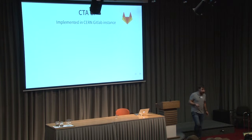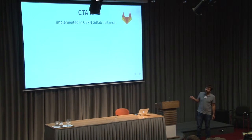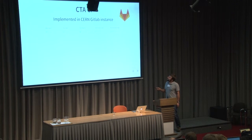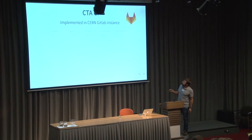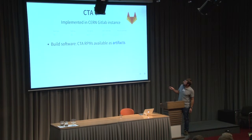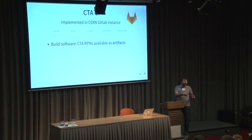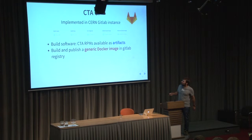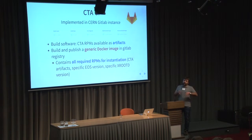The approach I chose for continuous integration was GitLab CI. GitLab is the Git repository we're using at CERN mainly. This is a screenshot of the pipeline executing on the CTA repo. You see that you have two first steps where you're building RPMs as artifacts. We're not publishing them to a repo because if you have a broken RPM you don't want it to go outside of the CI tests. Then we have a series of tests using Valgrind. And then we publish a generic Docker image. We also publish it in the GitLab registry.